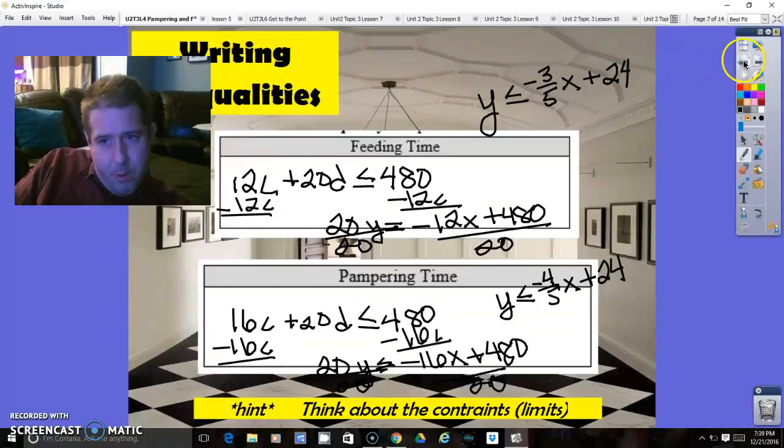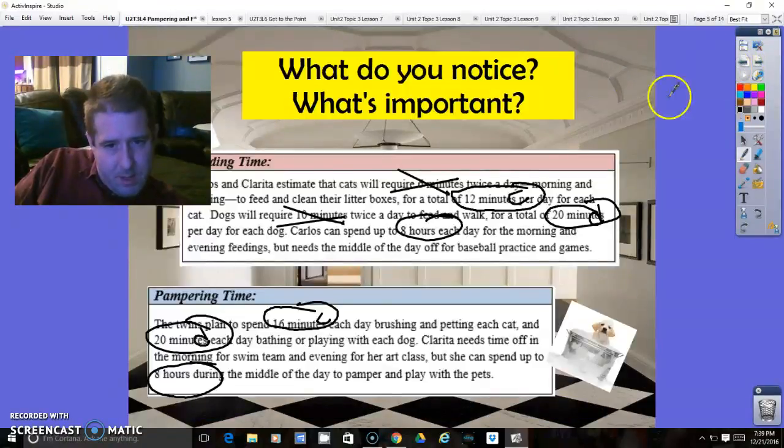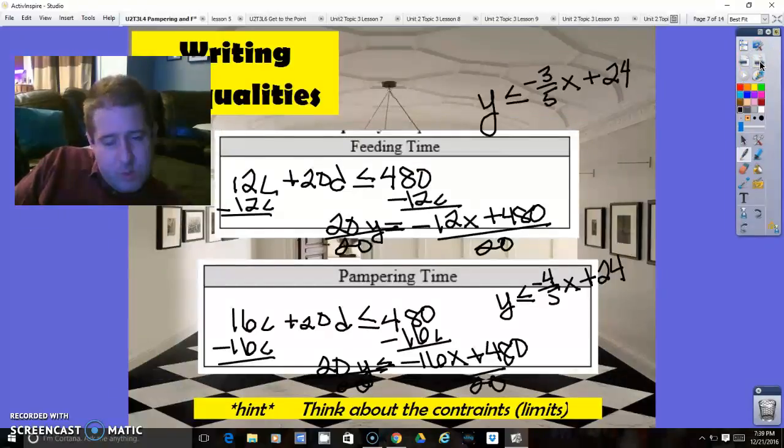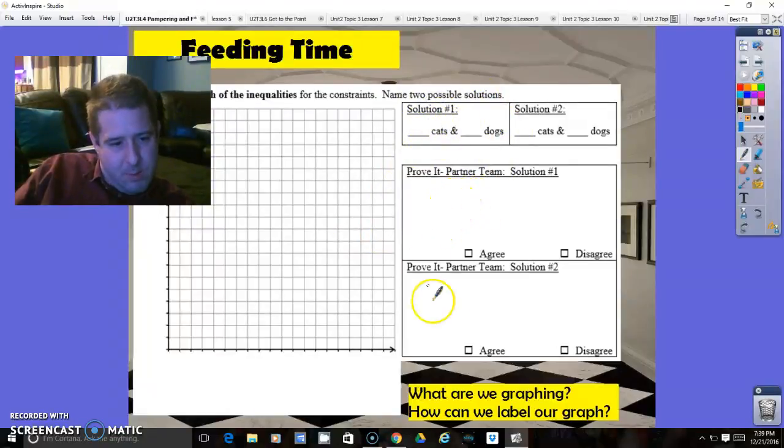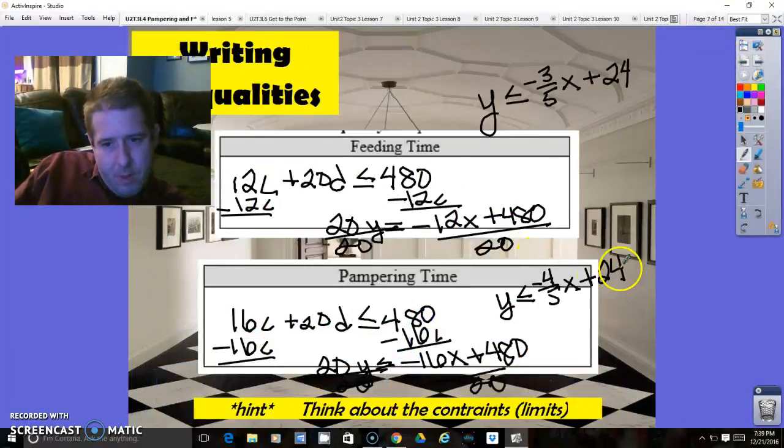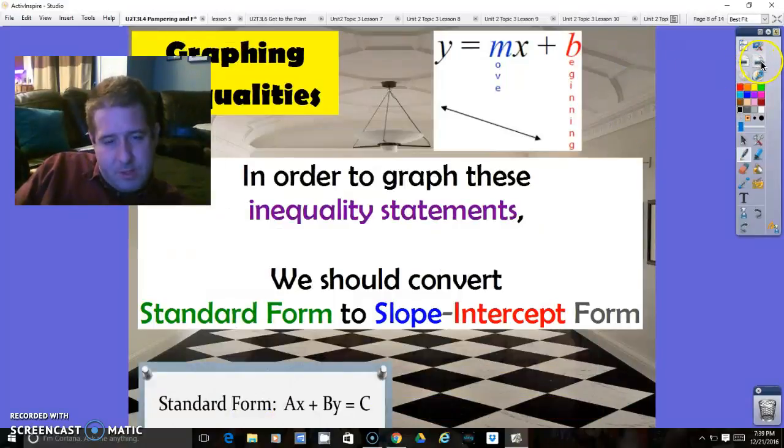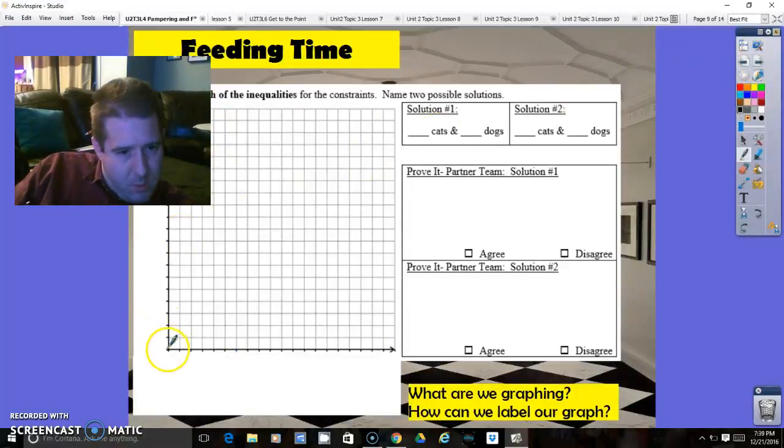So I could graph those on here and you've seen me do that in previous lessons. And then you're going to take solutions that you think do work and substitute them in and see if they do work. So if we've got numbers that are in the 24s, the y-intercept for both of them, is 24 going to fit?